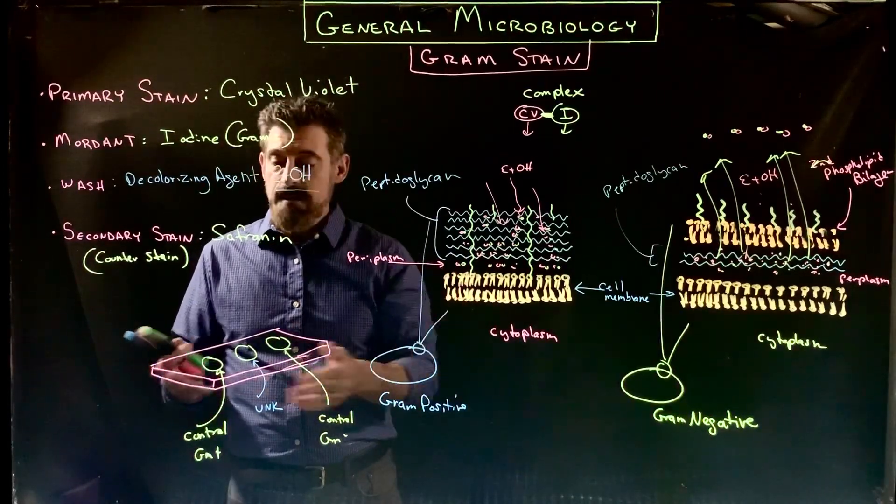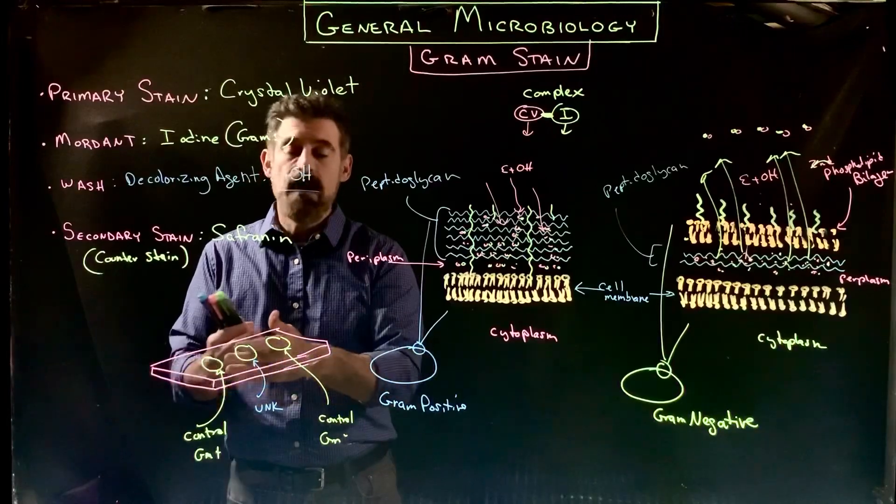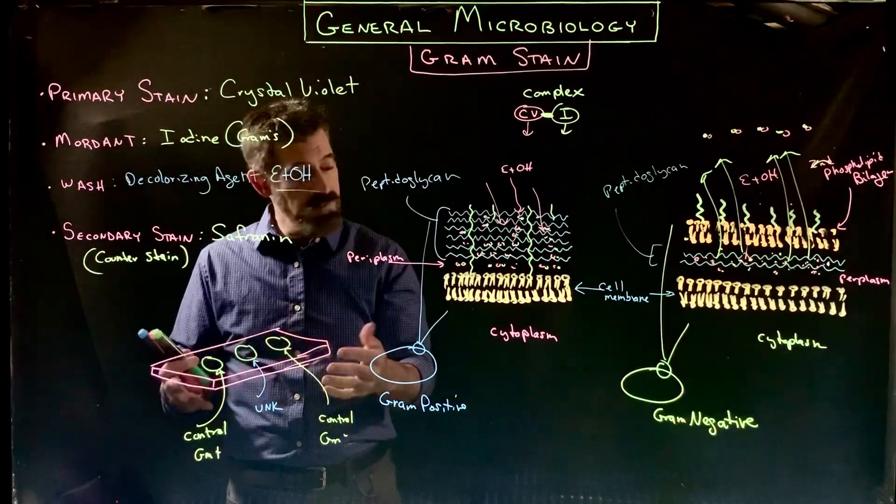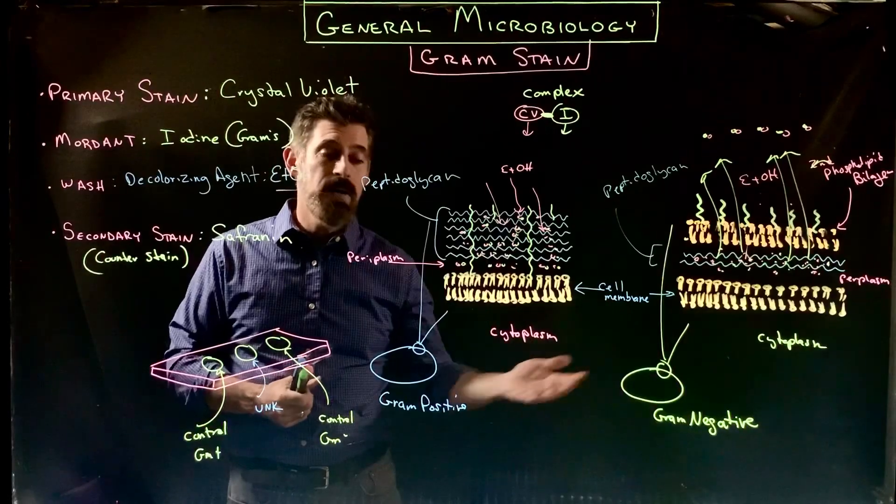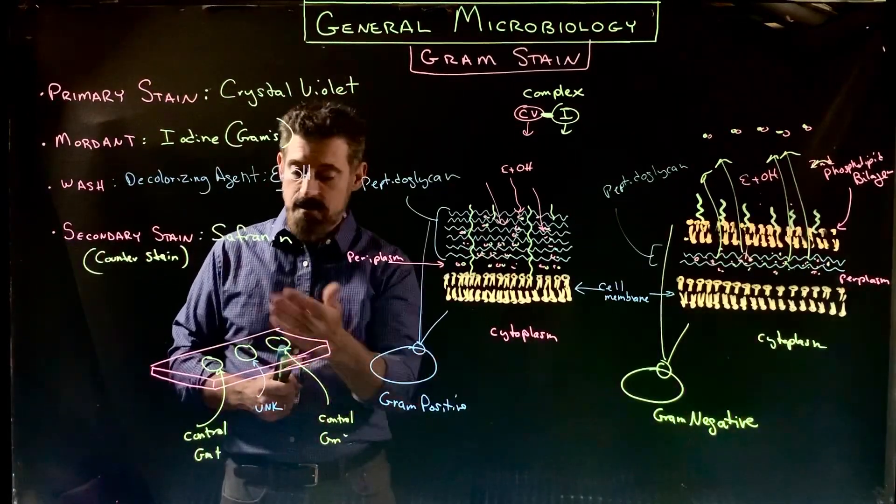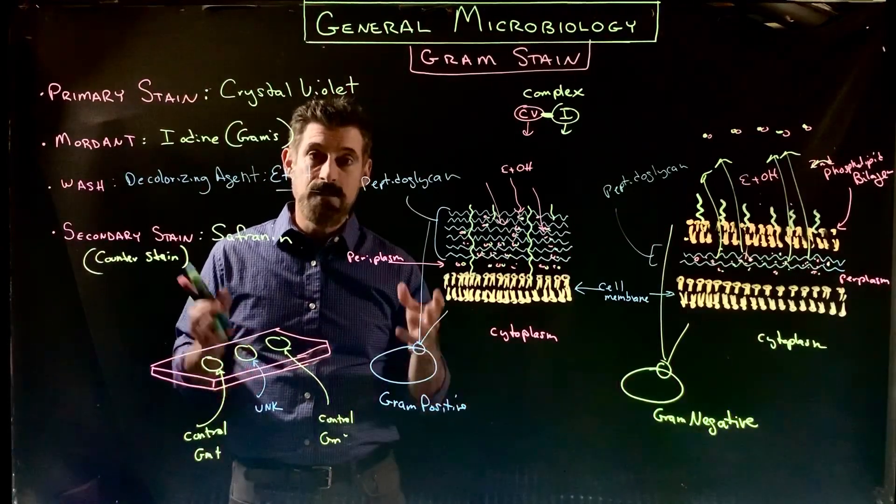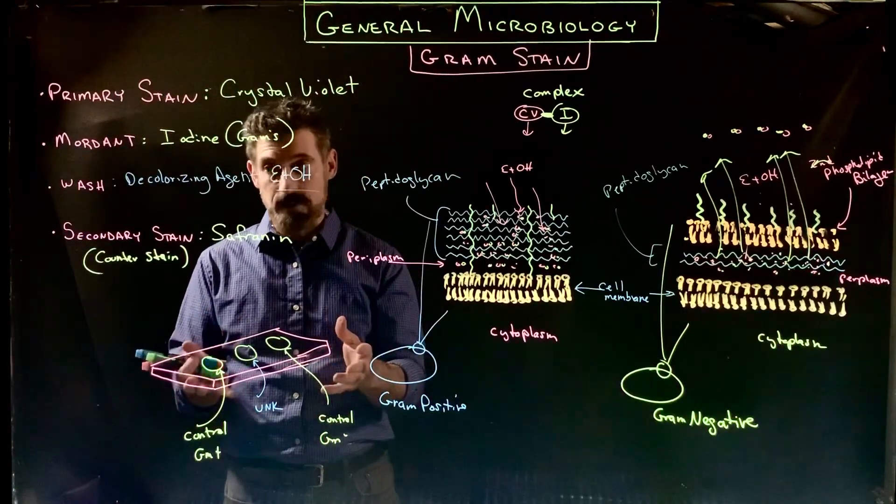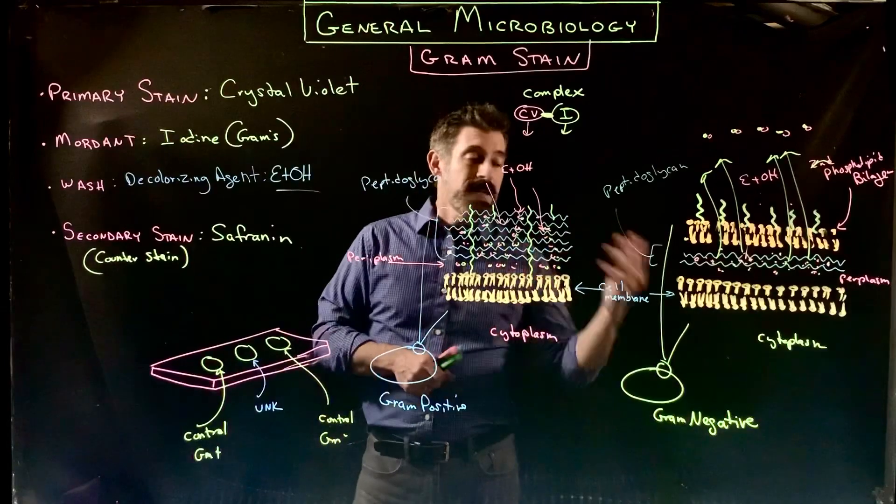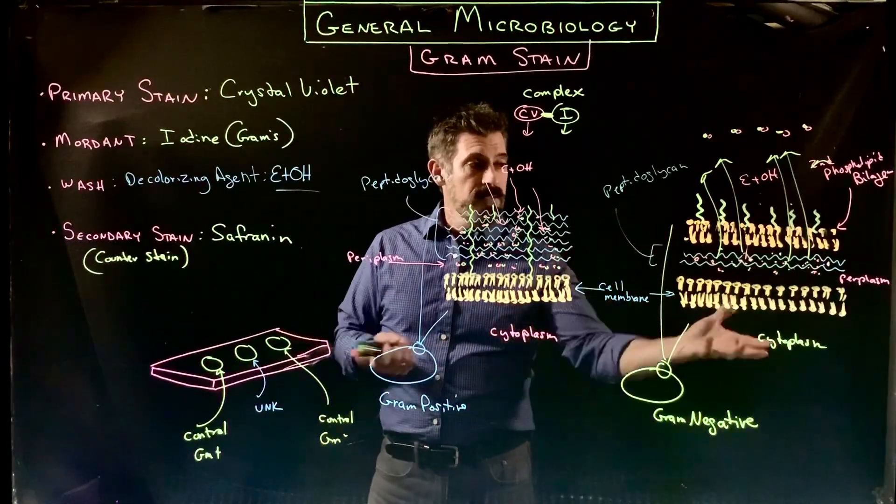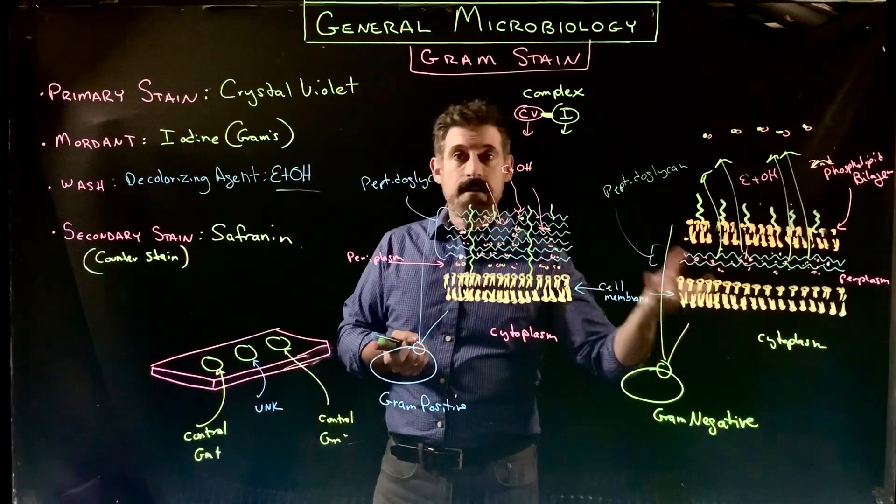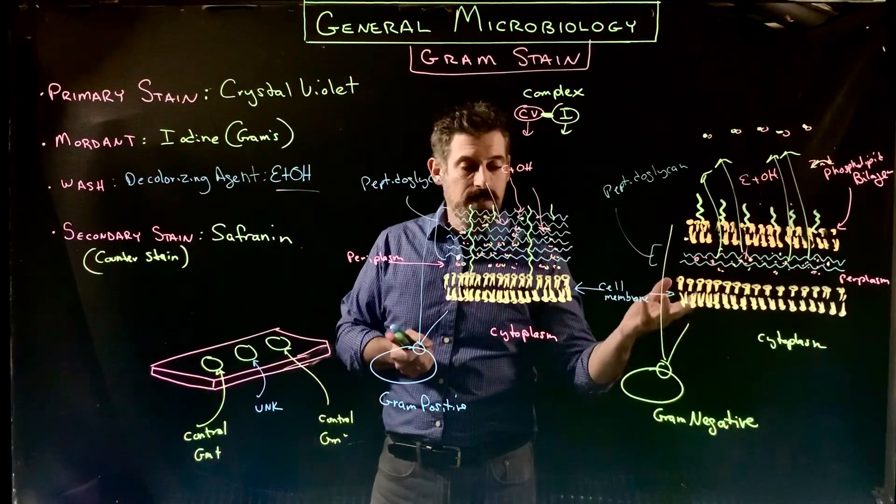They all get washed with safranin as well, so every everything is treated the same. When you do crystal violet it's the whole slide, when you do iodine it's the whole slide, when you rinse with alcohol it is the whole slide, and now even when you're doing the counter stain you still are going to do the whole slide. Controls and unknown all treated exactly the same, so it's proper controls, and then it's rinsed off.